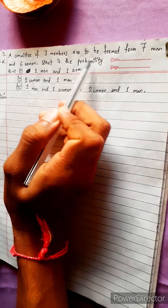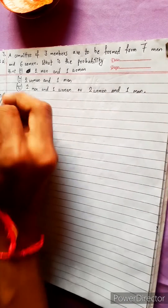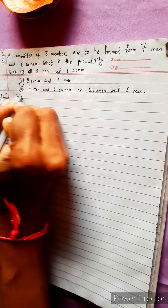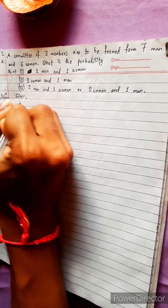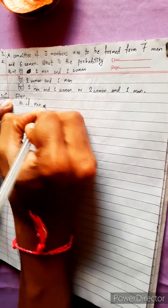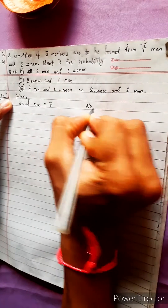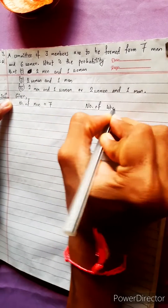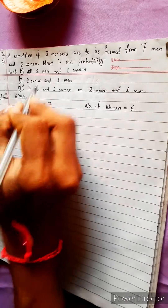A committee of three members is to be formed from seven men and six women. The number of men equals seven and the number of women equals six. This is the detail of possible outcomes.